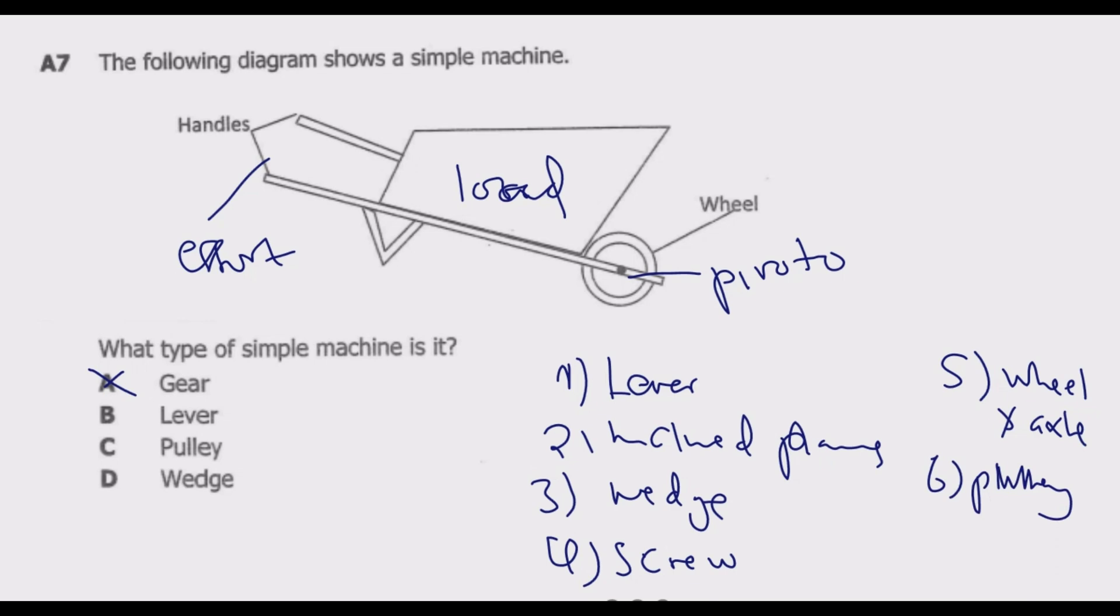When you look at the first one, the lever, the lever has a fulcrum or a pivot point where it turns. So this is the pivot point where it turns. It has a fulcrum or the pivot point. This is the pivot point where it turns.